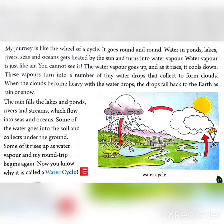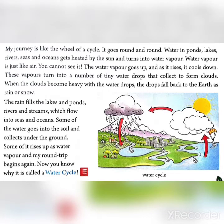When the clouds become heavy with water drops, the drops fall back to the earth as rain or snow. The rain fills lakes, ponds, rivers and streams, which flow into seas and oceans.